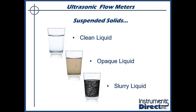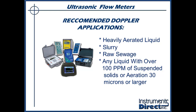Applications with chunks of stuff — slurry applications that look like oatmeal, sludge, mining, paper stock — those have high levels of solids and are applications where you don't want to put an invasive device in the process stream because it will clog, fail, or coat. Perfect applications for ultrasonic Doppler flow meters. Generically, ultrasonic Doppler flow meters work in sewage, definitely sludge, wastewater, mining, dredging, pulp and paper, and slurry-like applications. You need 100 parts per million suspended solids or aeration, 30 microns or larger, just to get it to work.